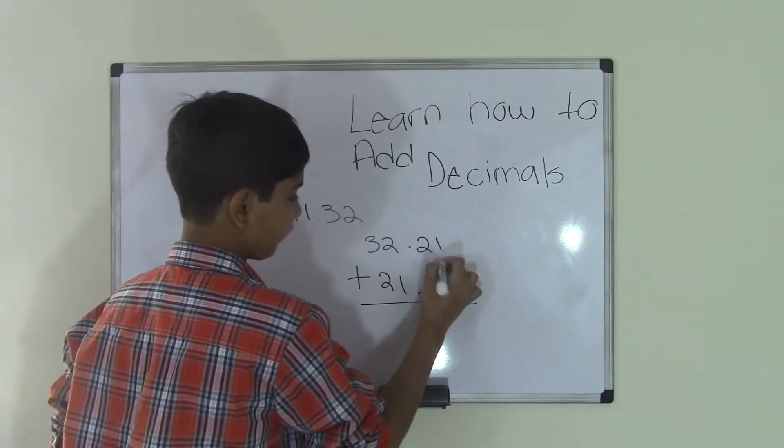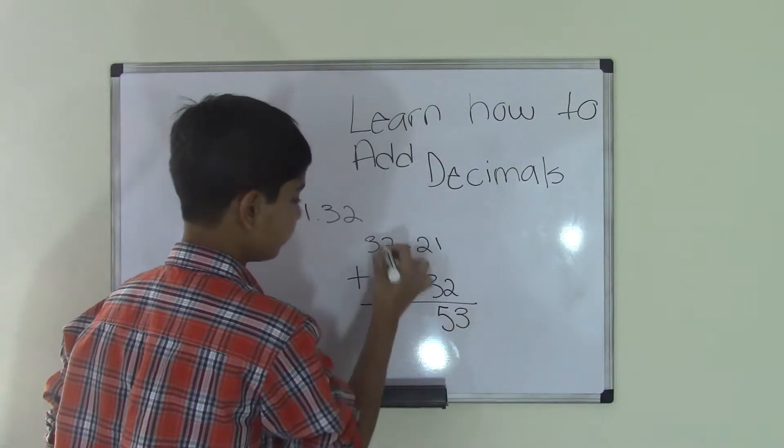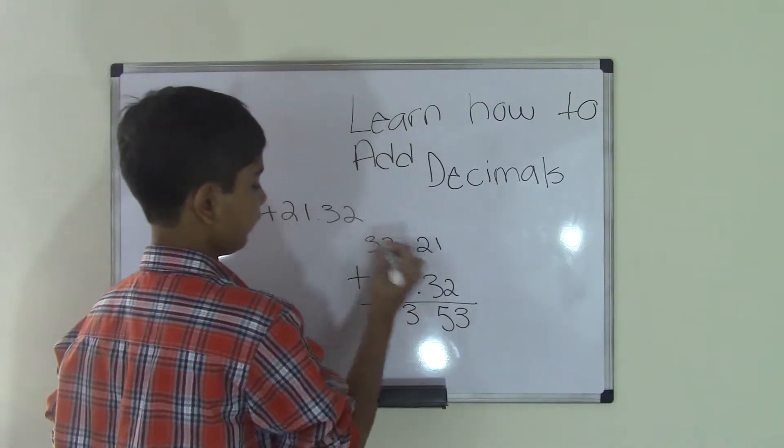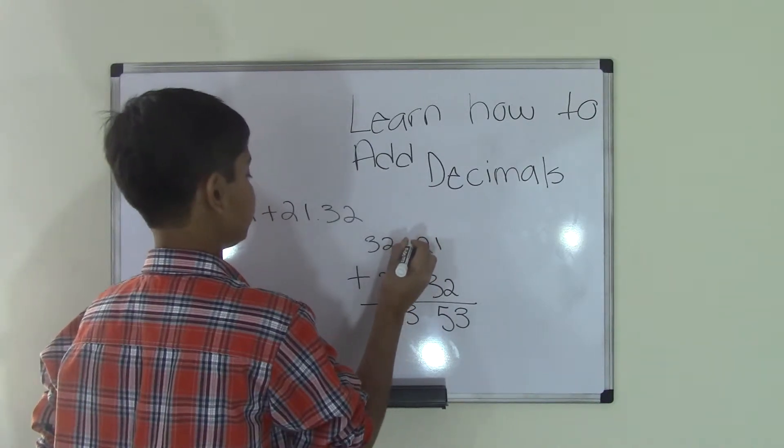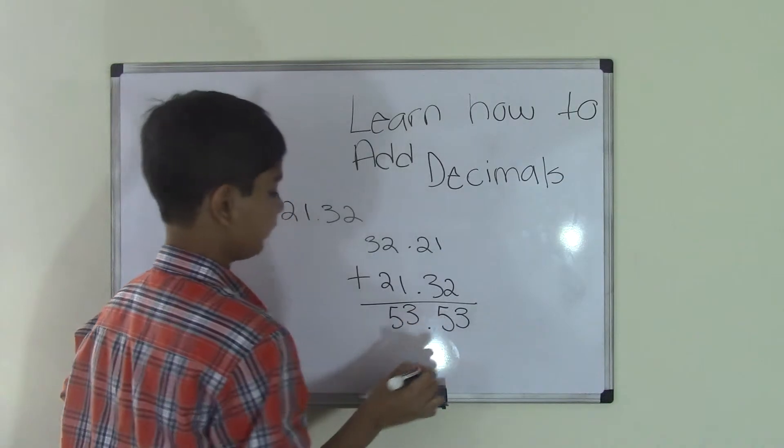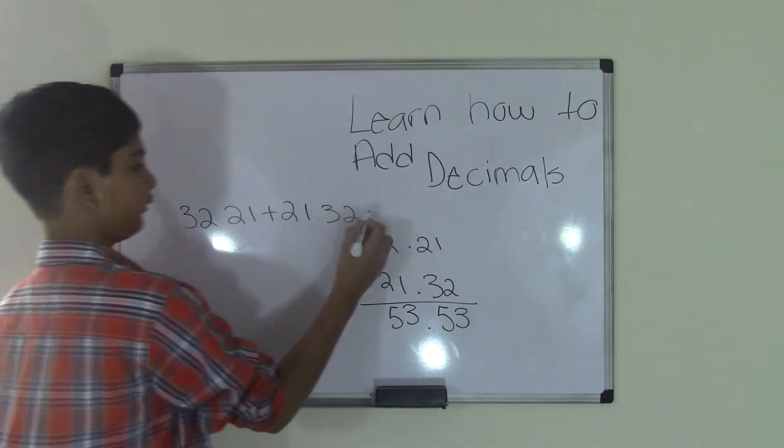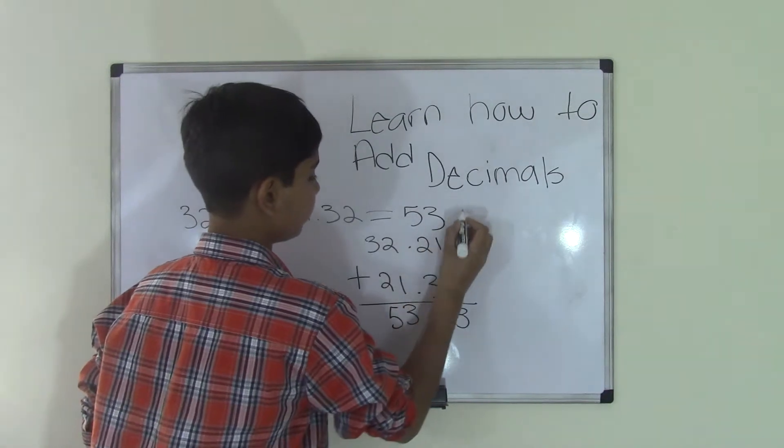And now we add them. 1 plus 2 is 3, 2 plus 3 is 5, 2 plus 1 is 3, and 3 plus 2 is 5. And now all we have to do is bring down the decimal point straight down and we put that there and our sum would be 53.53.